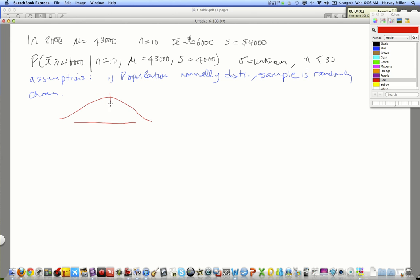So, this is a distribution. Sample standard deviation is what we have is 4,000, and we want to know what's the probability of obtaining a sample mean of 48,000 or more. All right, so, I'm going to shade this in for you. This is what we're interested in.